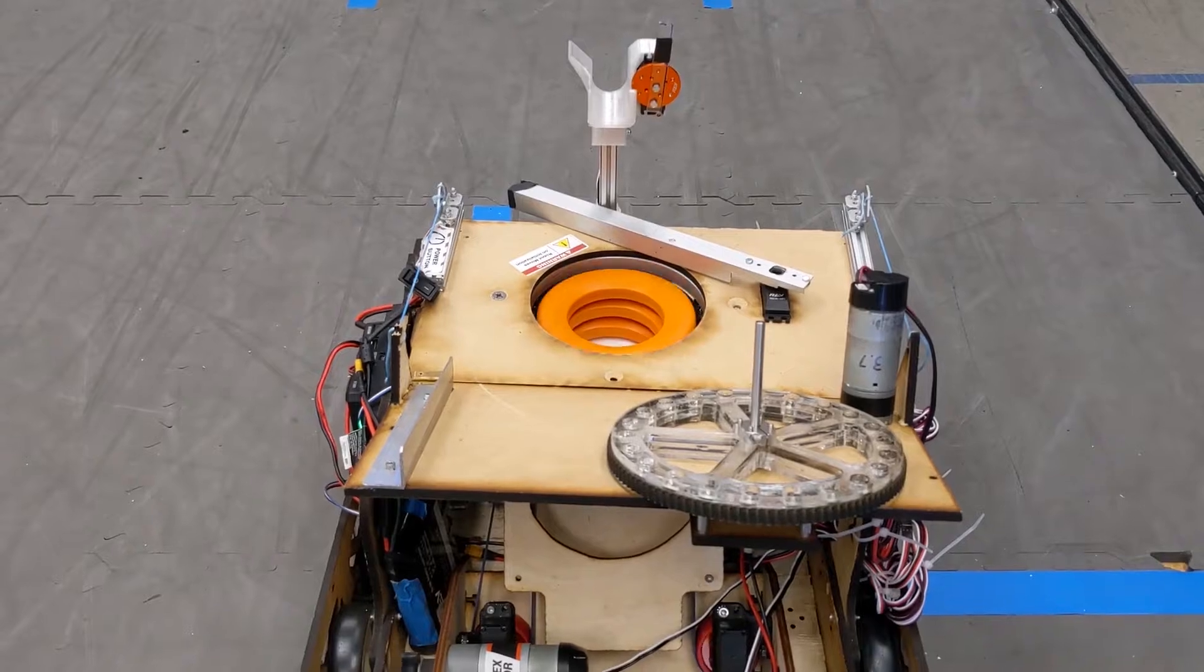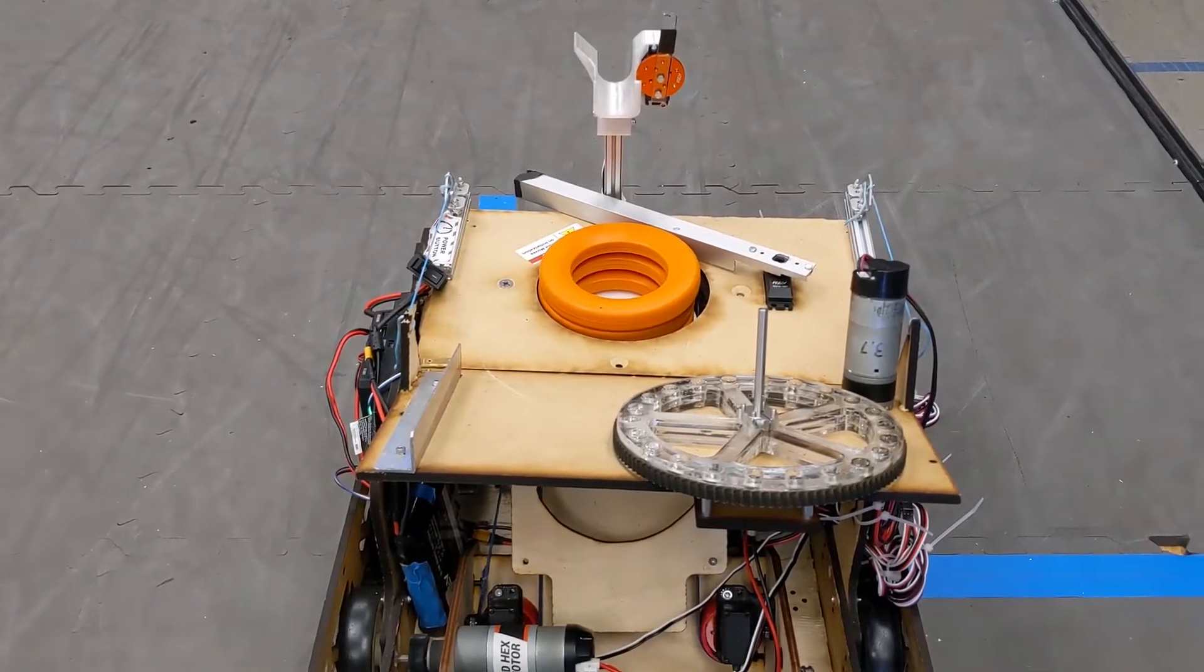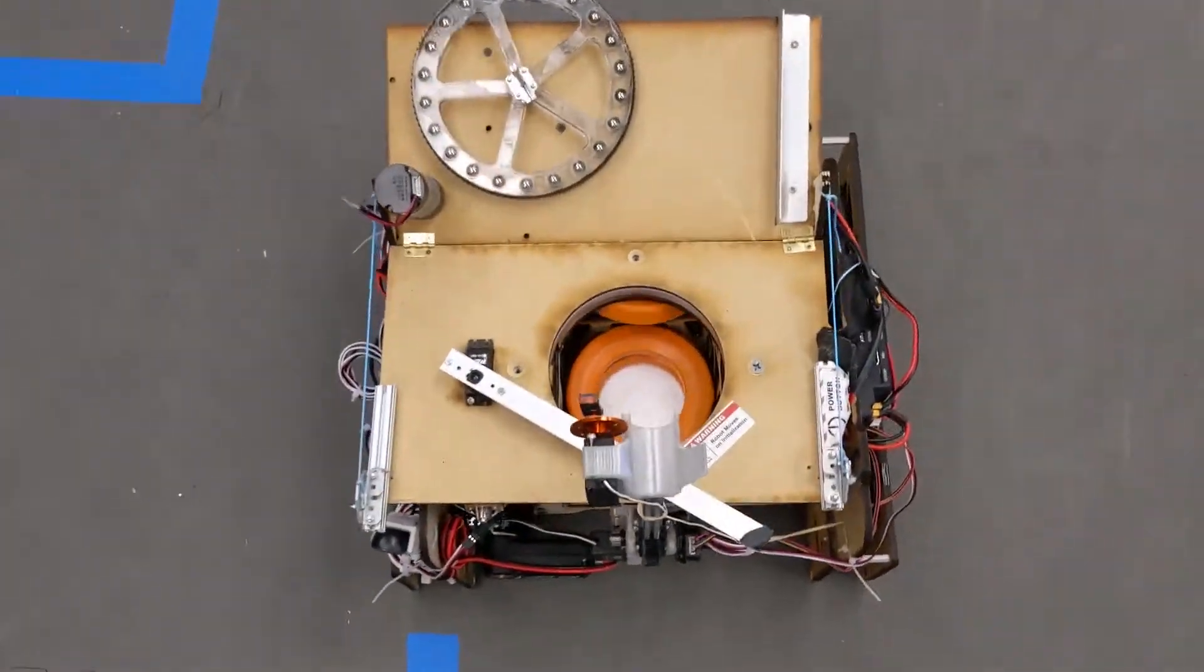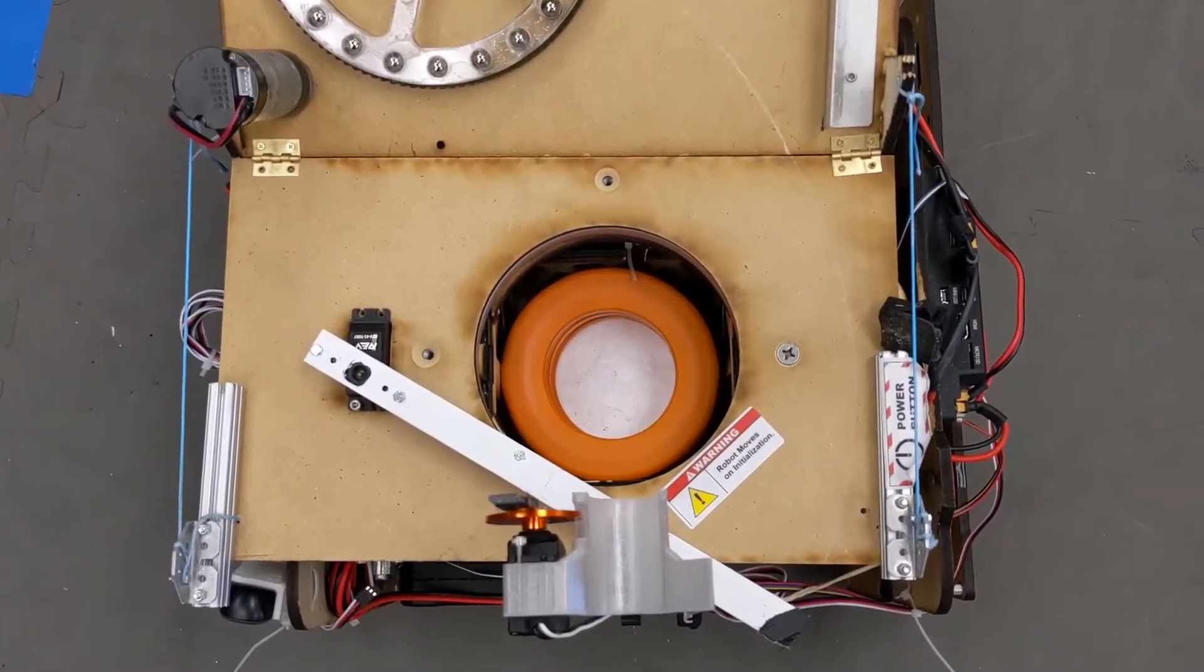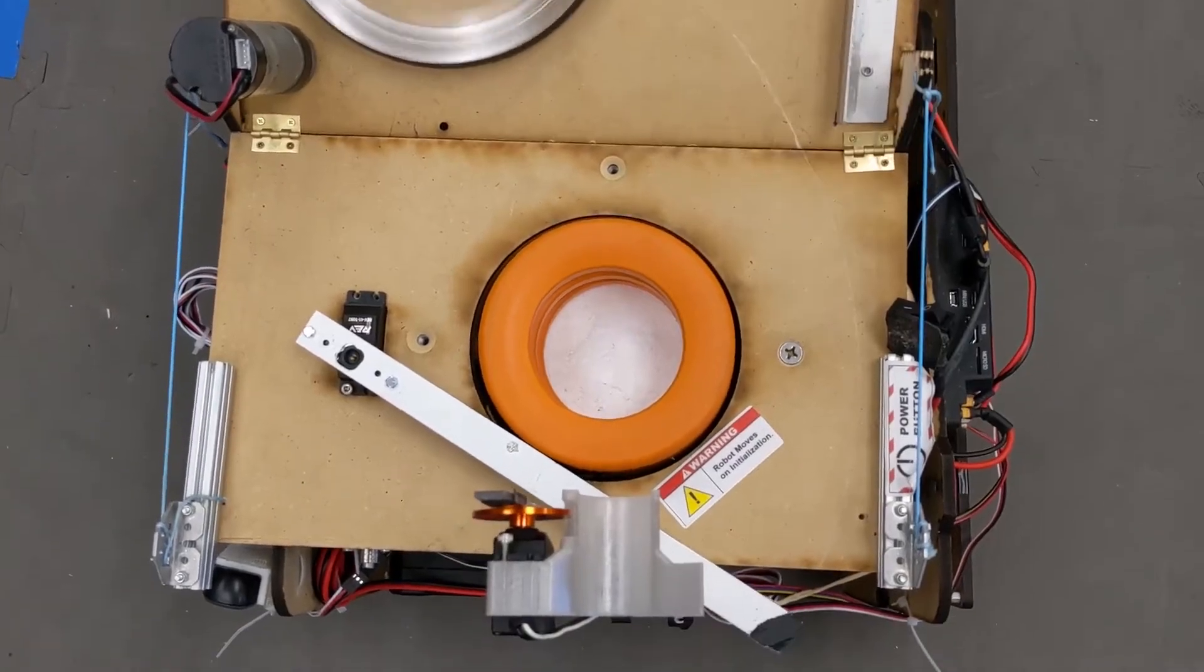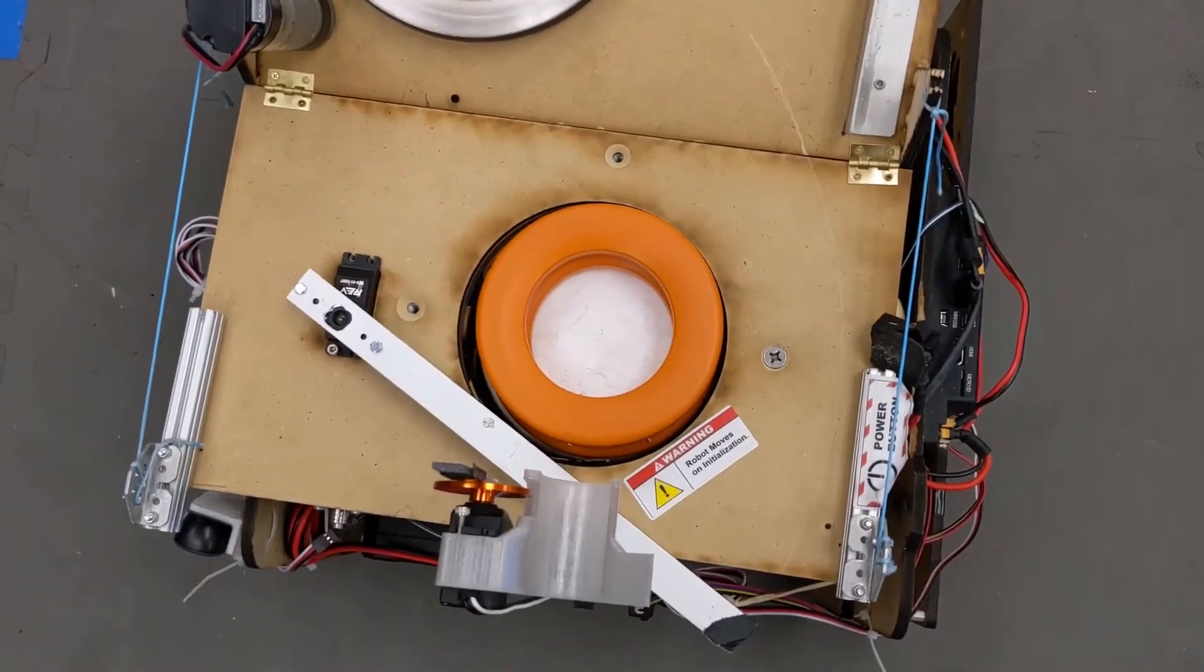The lift moves rings from the intake into the shooter. It is powered by a core hex motor that is geared for speed. The motor powers the belt, which moves a linear slide up and down. The slide has a 3D printed piece on it that holds our laser-cut lift plate, which takes the rings up to the shooter.